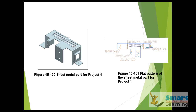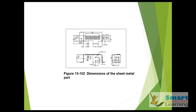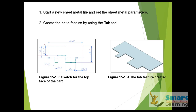This is the final output which we are expecting, and this is the flat pattern of the sheet metal we are expecting. Initially all the dimensions are shown here, and the side cutout details are also given here with the positioning and width. We have to start from these typical sketches and then create the base tab wall.